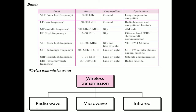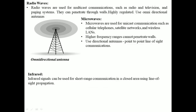Wireless transmission can be categorized into three types: radio waves, microwaves, and infrared. Radio waves are used for multicast communications such as radio communication, television communication, and paging systems.